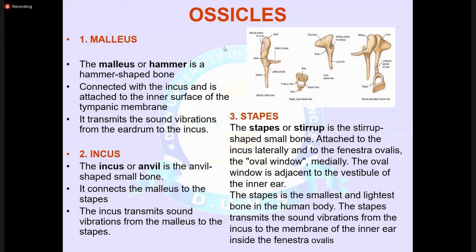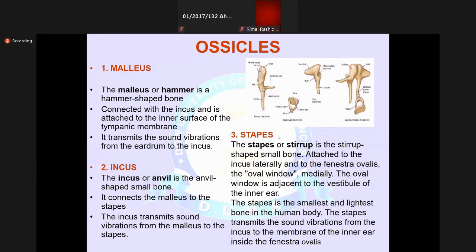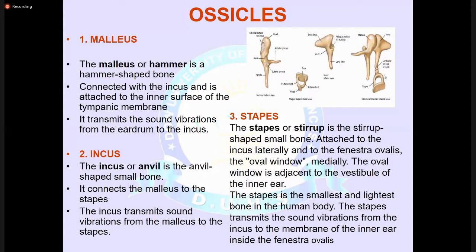The malleus connects with the incus and is attached to the inner surface of the tympanic membrane. The incus connects the malleus to the stapes and transmits vibrations from the malleus to the stapes. The stapes has two crura and covers the oval window, transmitting sound from the incus through its crura to the oval window.